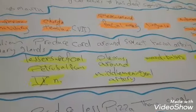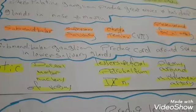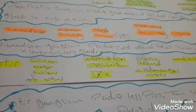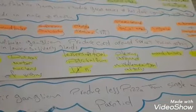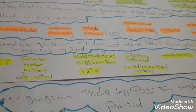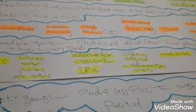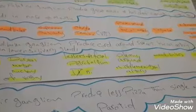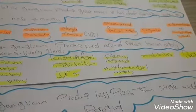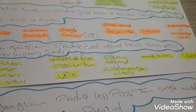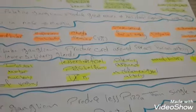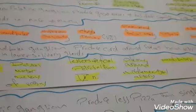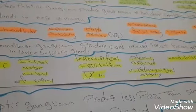The mnemonic is: 'Submandibular ganglion — produce cord around sweet facial artery in lower salivary glands.' Here, 'cord' is the chorda tympani (parasympathetic), 'sweet' is a placeholder, 'facial artery' refers to the plexus around the facial artery (sympathetic), and 'lower salivary glands' are the submandibular and sublingual glands.